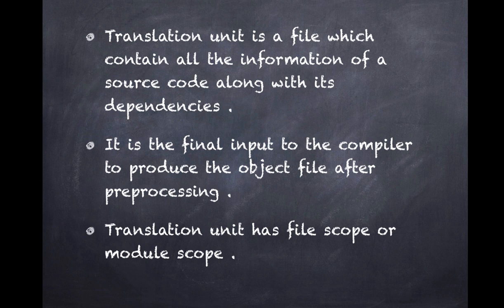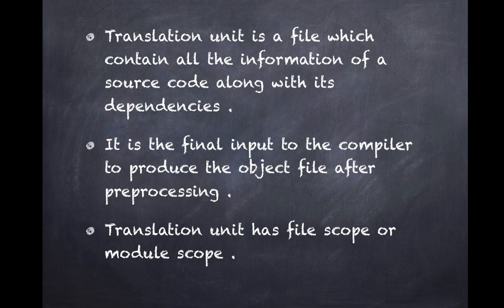Where does the translation unit fit in the compilation process? The compilation process starts with a source code text file, from which an executable is eventually created. The translation unit is the final input to the compiler to produce the object file — it is produced after preprocessing. After preprocessing, all header files and dependent information are combined with the source code.